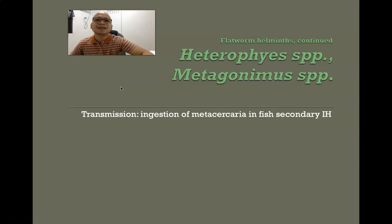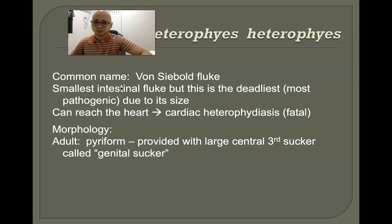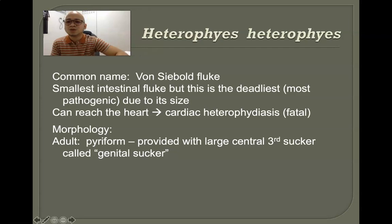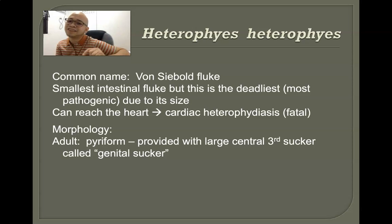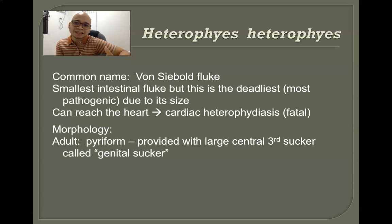The ova also have an operculum and are considered one of the second largest ova after Fasciola and Fasciolopsis. Moving on to Heterophyes heterophyes, these are considered the smallest but deadliest trematodes, also known as the von Siebold fluke. It is the smallest intestinal fluke, yet the most pathogenic. Because of its tiny size, it can reach the heart causing cardiac heterophyiasis, which can be fatal — some patients die as if from a heart attack.